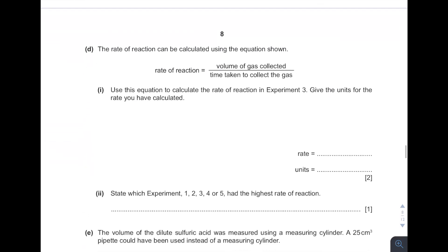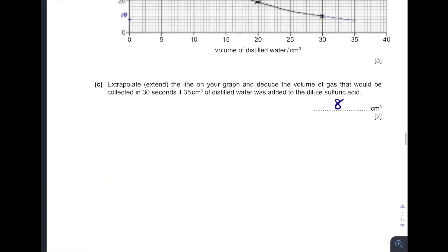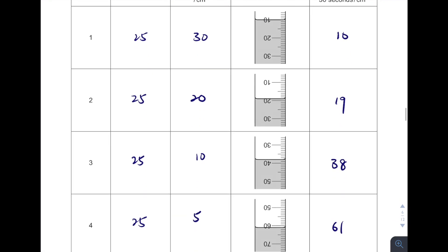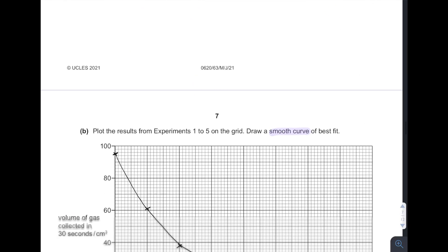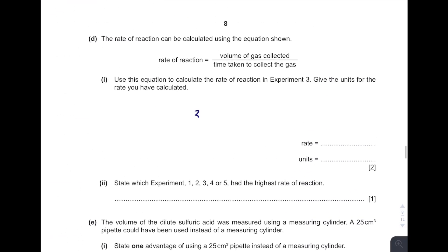And then next one. Use this equation to calculate the rate of reaction in experiment 3. See, volumes of gas collected divided by the time taken. So experiment 3, what is the volumes of gas collected? It is 38. Time taken is 30 seconds. So 38 cm³ divided by 30 seconds. So 38 divided by 30, you get 1.27 with a unit cm³ per second.